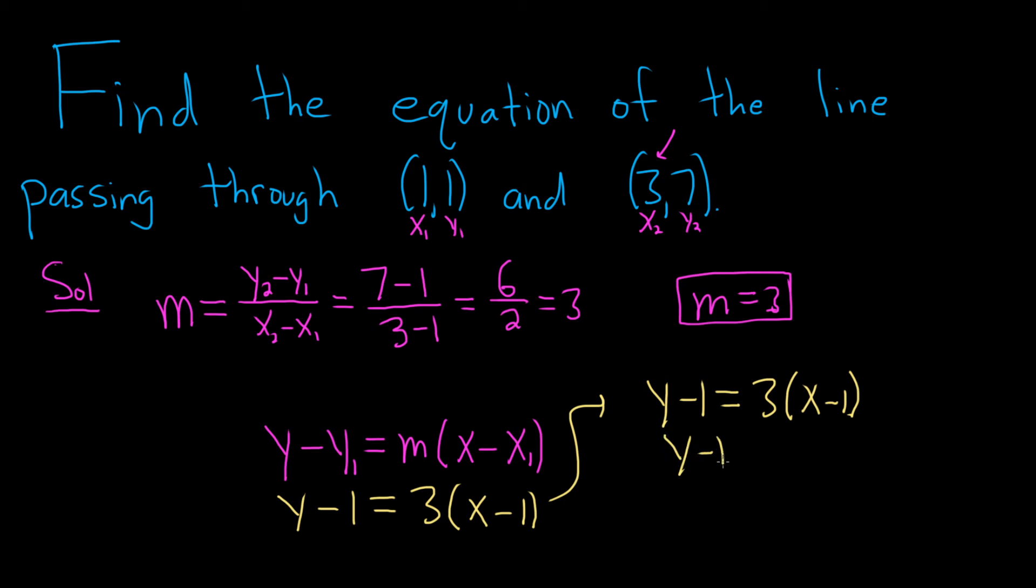3 times x minus 1. So this is y minus 1 equals, let's go ahead and distribute that 3. So 3 times x is 3x, and then 3 times 1 is 3, so minus 3.